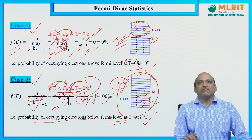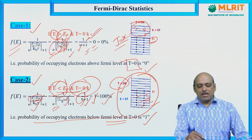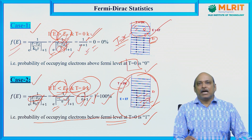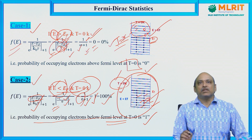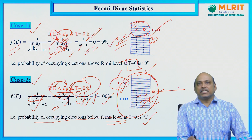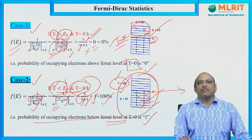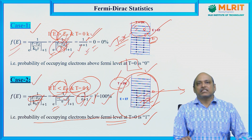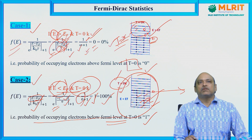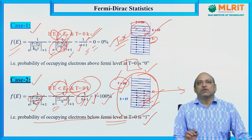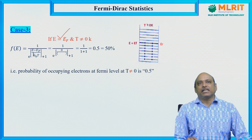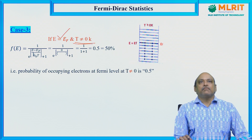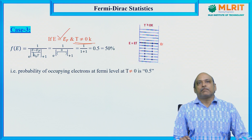In Case 1 and Case 2, we took E above and below the Fermi energy level at T = 0 K. Now a third case can be taken where the given energy level E is exactly at the Fermi energy level (E = EF), but the temperature is other than 0 degree Kelvin.